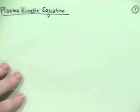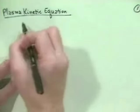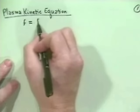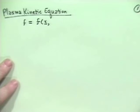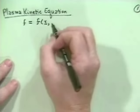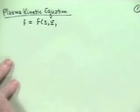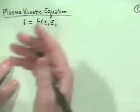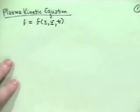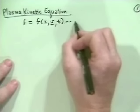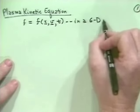Last time we said what we really wanted was a distribution function f, which is a function of three spatial coordinates x, y, z — configuration space — three velocity space coordinates vx, vy, vz, or alternatively v-perp, angle theta, and vz, and time. So it's evolution in a six-dimensional phase space.